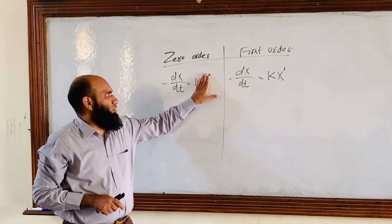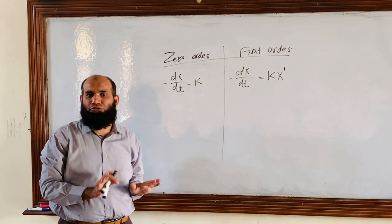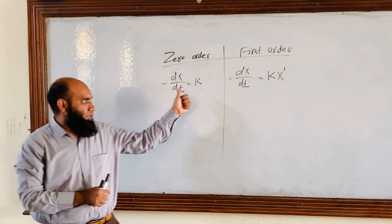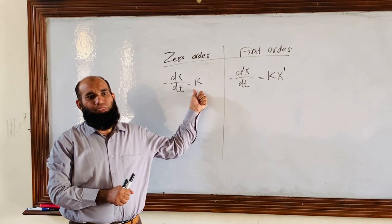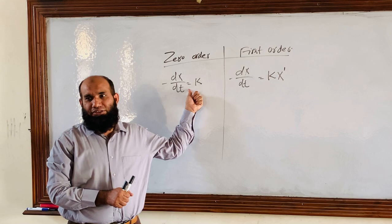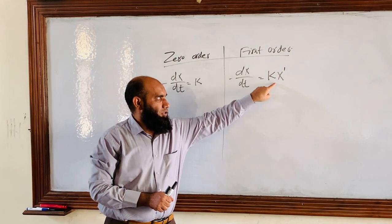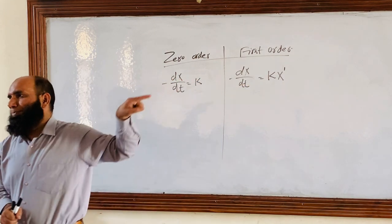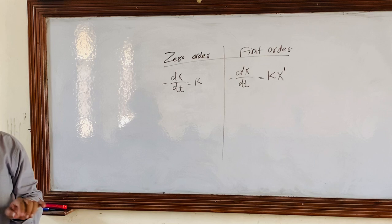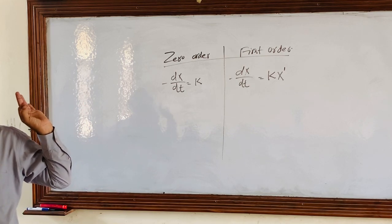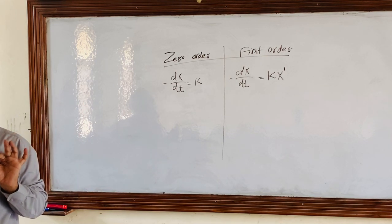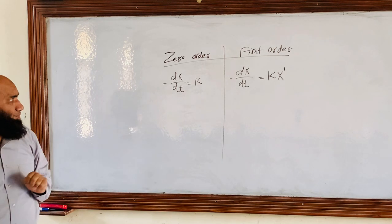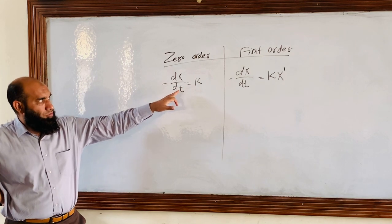This means x to the power zero equals one, so writing it or removing it is equivalent. In case of zero order, the process depends on time, not on the concentration of the dose. In first order, it does depend on concentration. The first difference is: zero order is concentration independent, first order is concentration dependent.